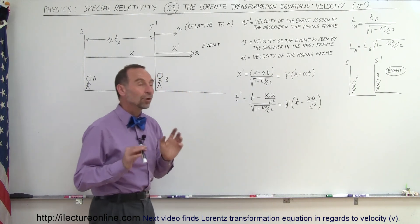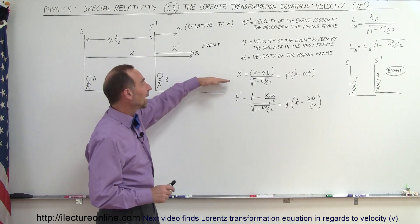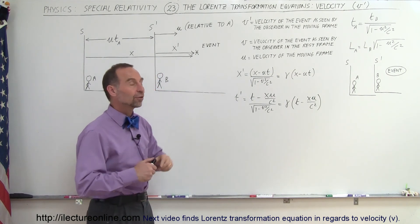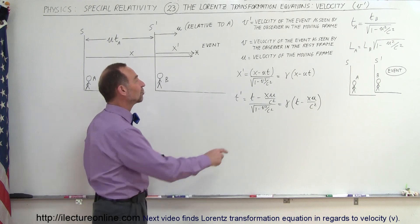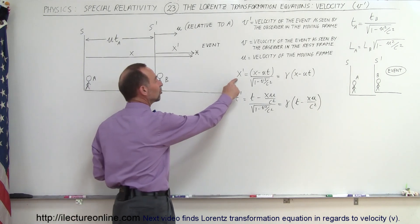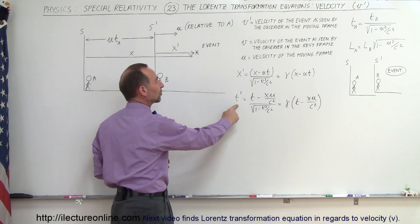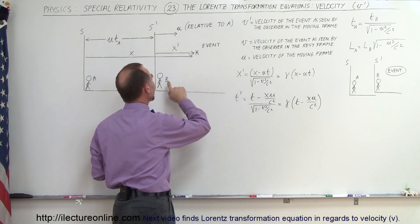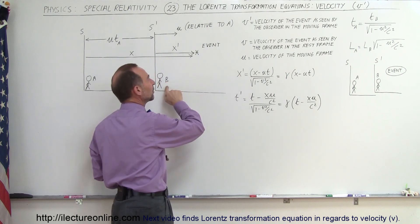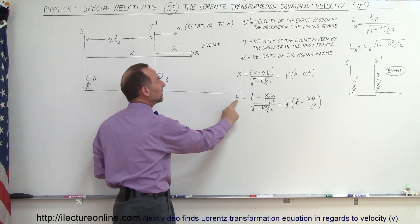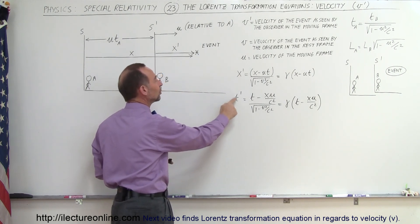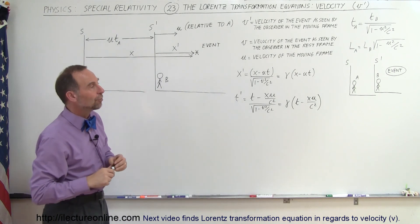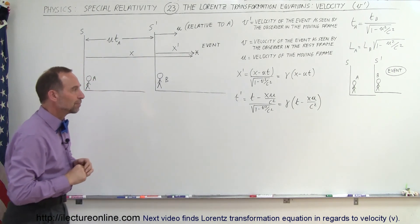We also have written down the two equations that we found in the previous Lorentz transformations, one for position and one for time. X' is the position as seen by the observer in the moving reference frame. T' is equal to the time as measured by the observer in the moving reference frame.